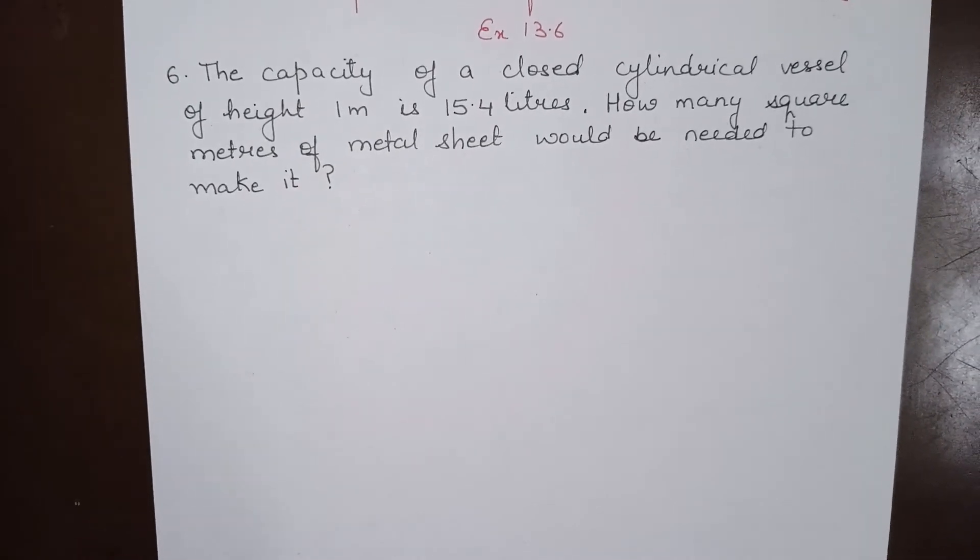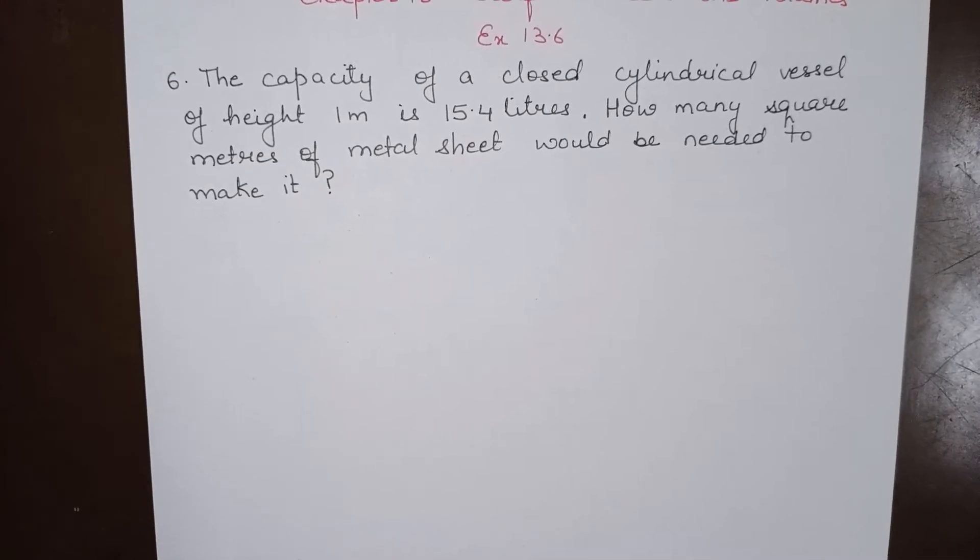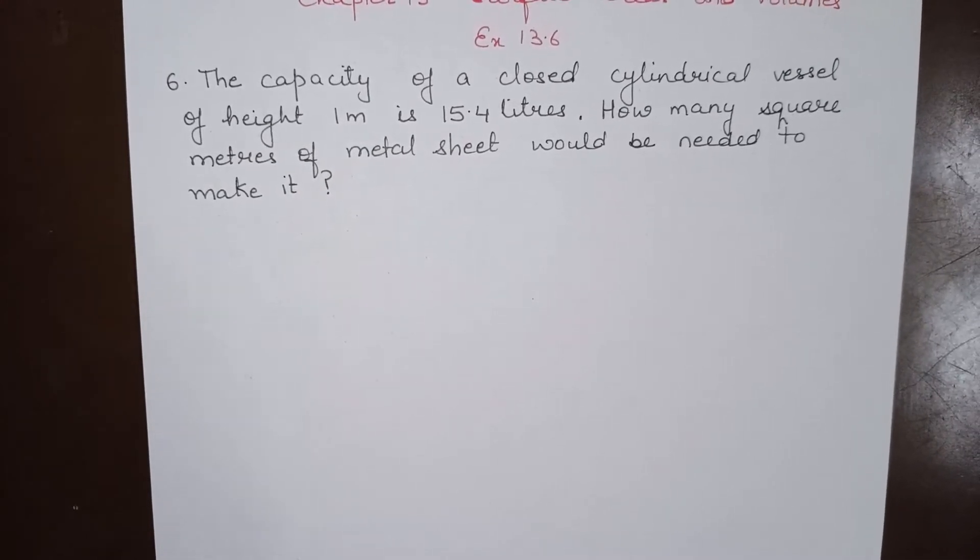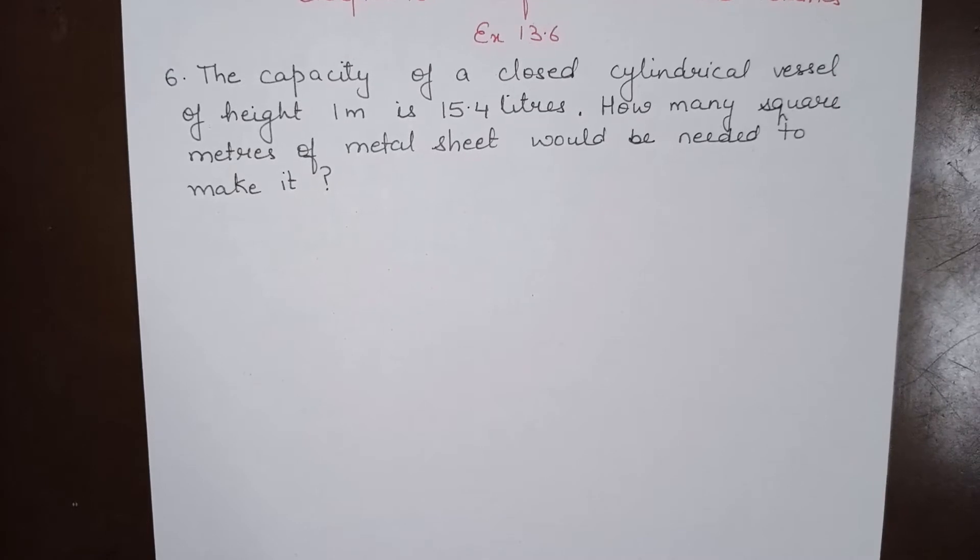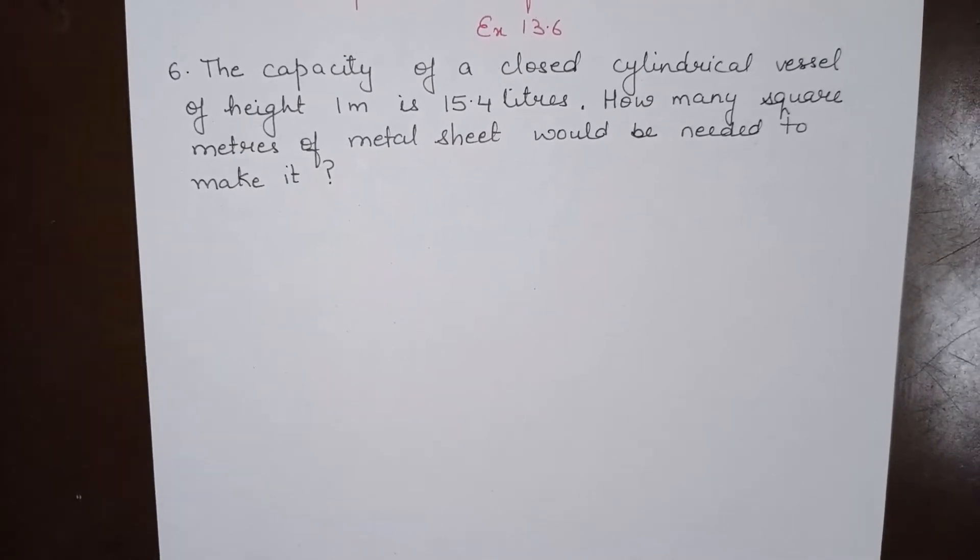The capacity of a closed cylindrical vessel of height 1 meter is 15.4 liters. How many square meters of metal sheet would be needed to make it?